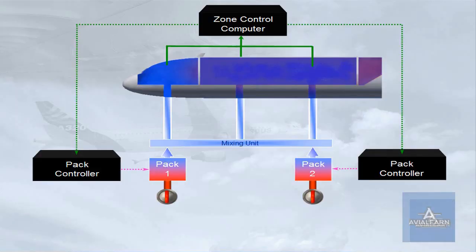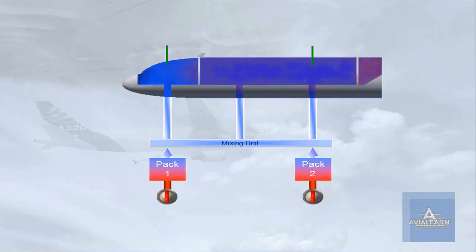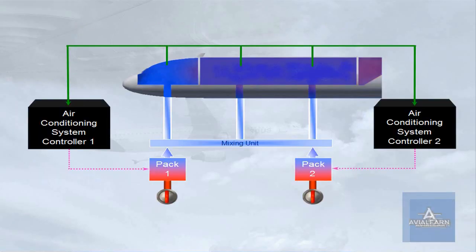Zone controller and pack controller are fully integrated into the air conditioning system controller. Each air conditioning system controller comprises two lanes. In case of one lane failure, the second lane takes over. In case of both lanes failure, the related pack is lost.